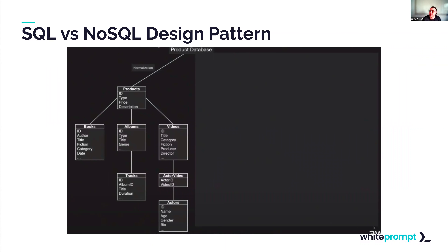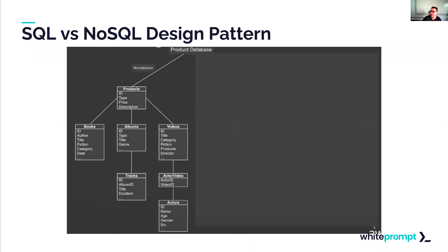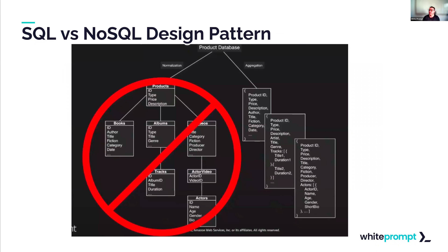Let's compare SQL versus NoSQL design patterns for a product database. In SQL, we go with normalization — a table for products, each related to books, albums, videos, resulting in many tables. If we go with NoSQL design, we use denormalization, so the products database has just one table with all dimensions inside. This reduces complexity and significantly reduces CPU load.